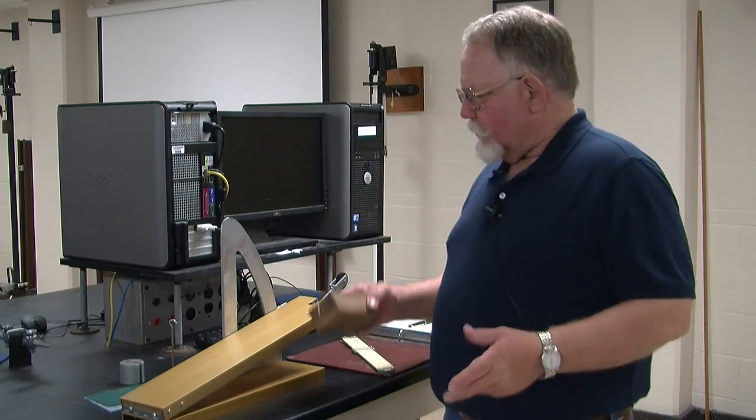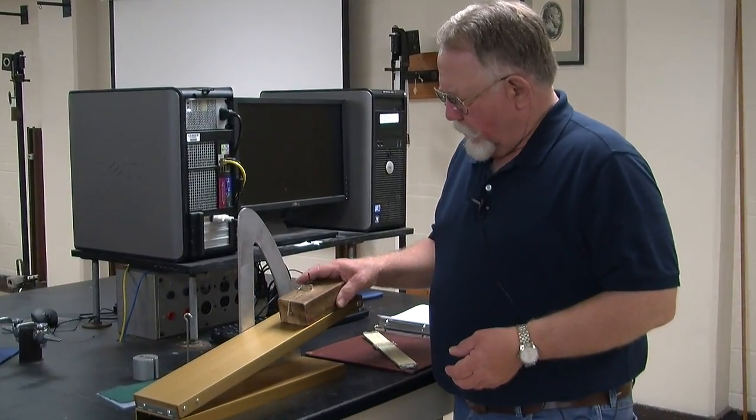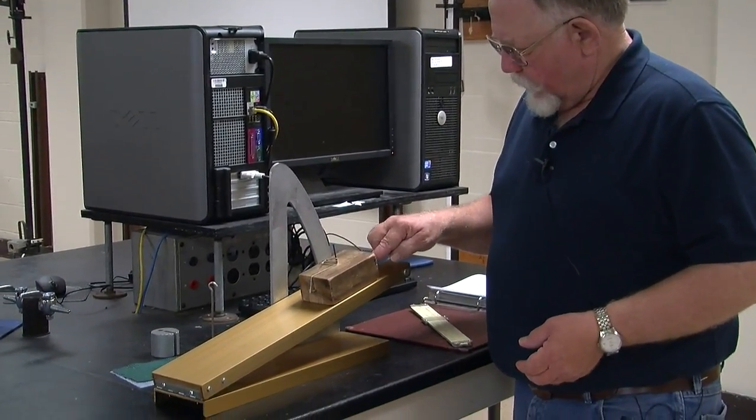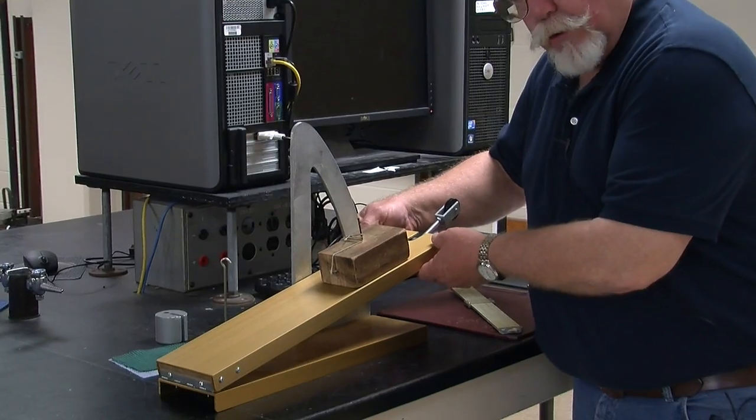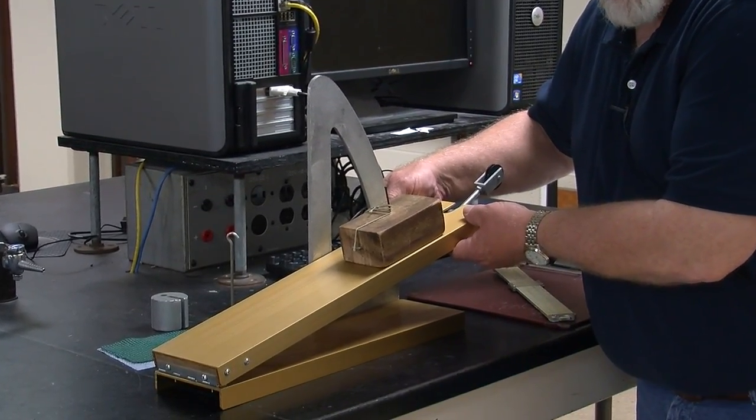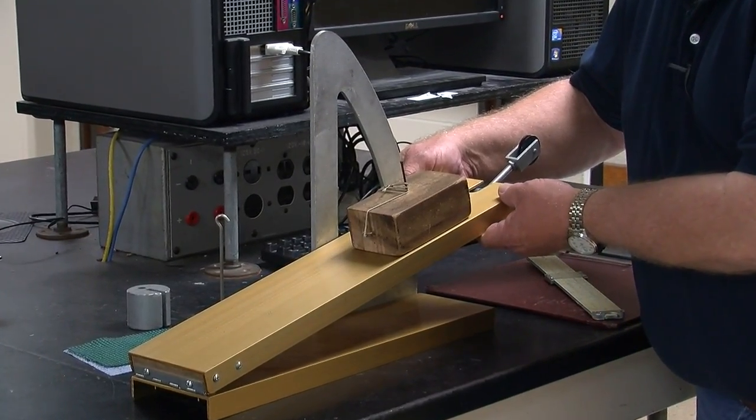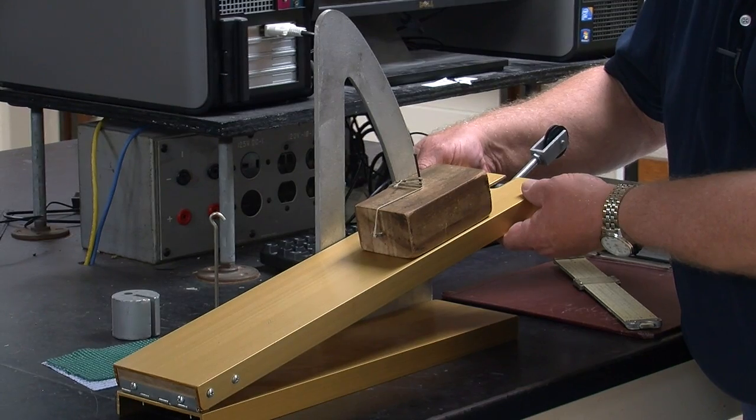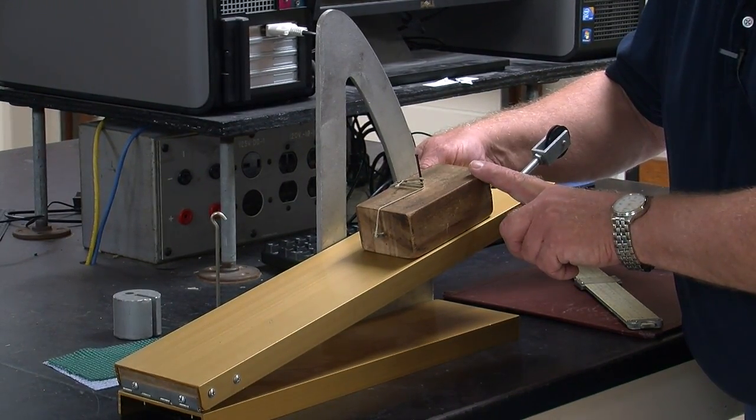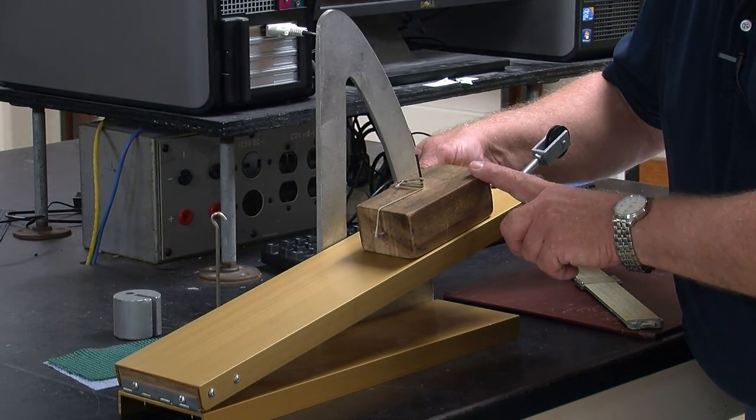Here's our inclined plane, here's our block of wood. We put this on here and what we want to do is find what's called the critical angle, that is the angle of the plane with the horizontal at which the block will slide down the plane at constant speed.